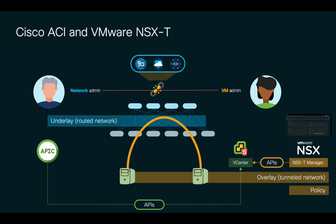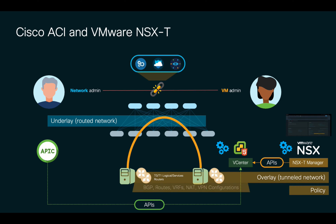In NSX-T, the VM admin has to configure both vCenter and NSX-T Manager. In order for the overlay to work, they will also have to implement concepts like T0 and T1 virtual routers for communication and services. This means that understanding concepts like VRFs, BGP, NAT, and many others will be required, which may be overwhelming, especially if the VM or NSX-T admin's core skillset is VM-centric and not networking-centric.